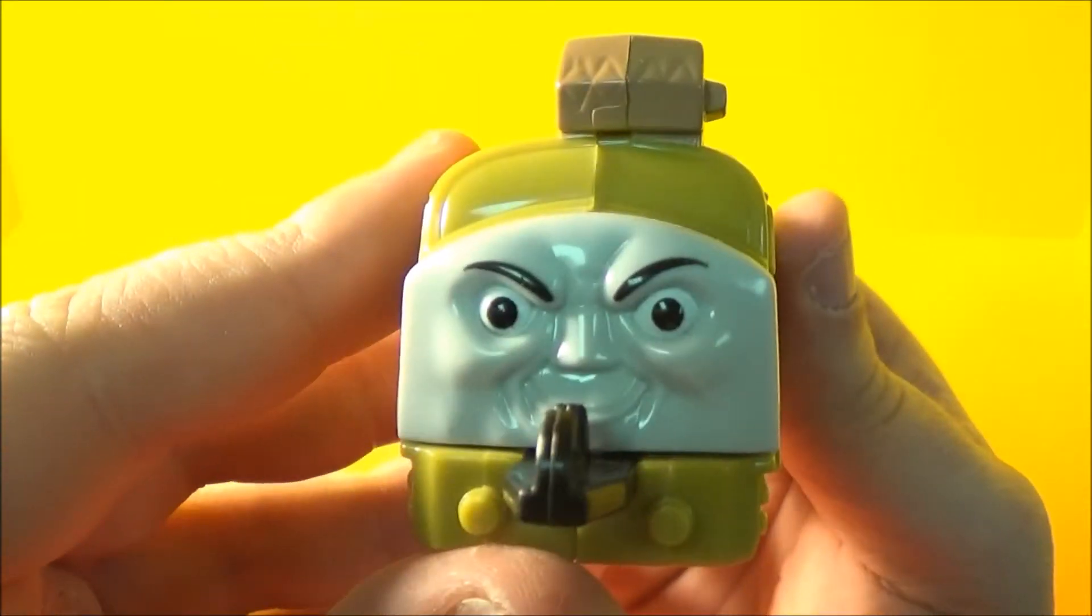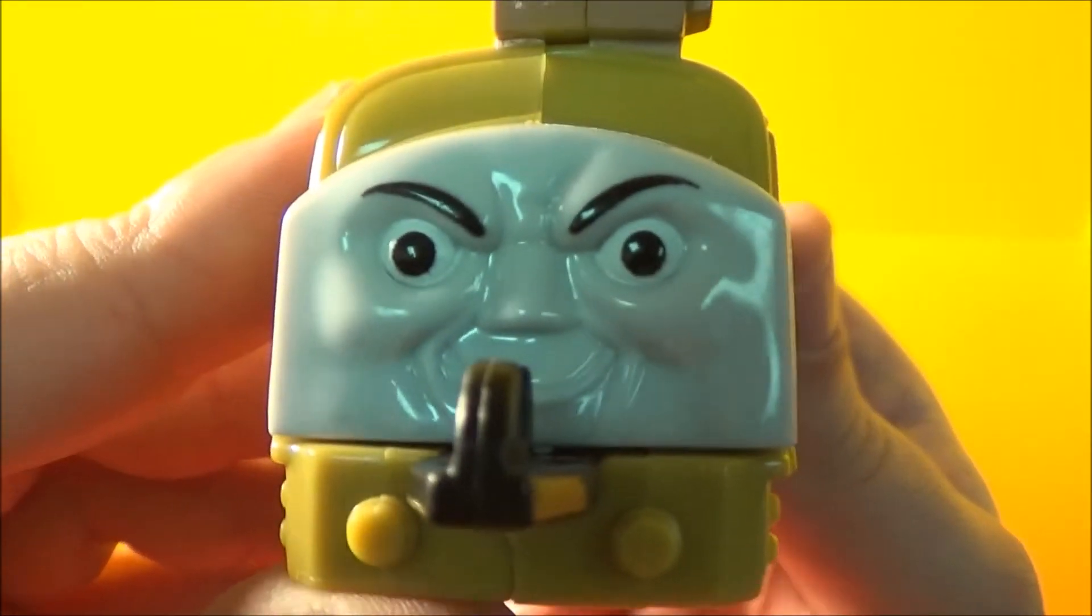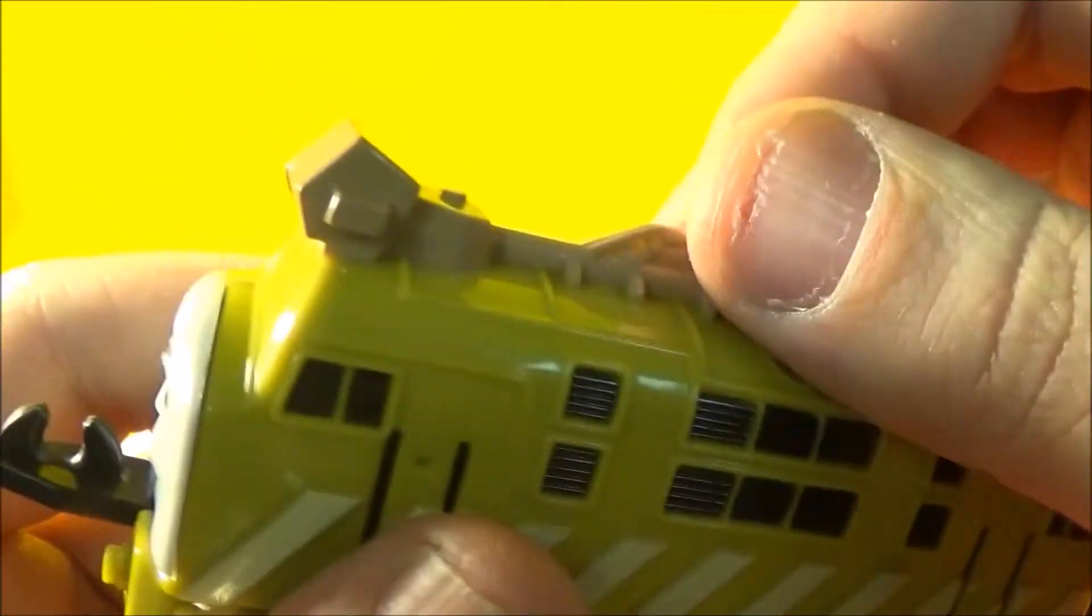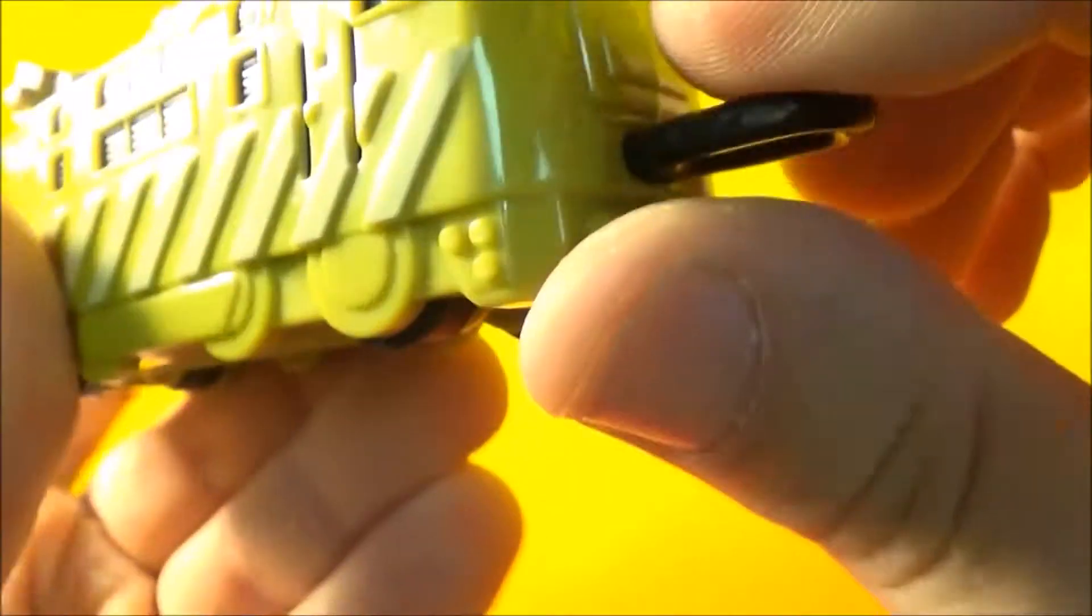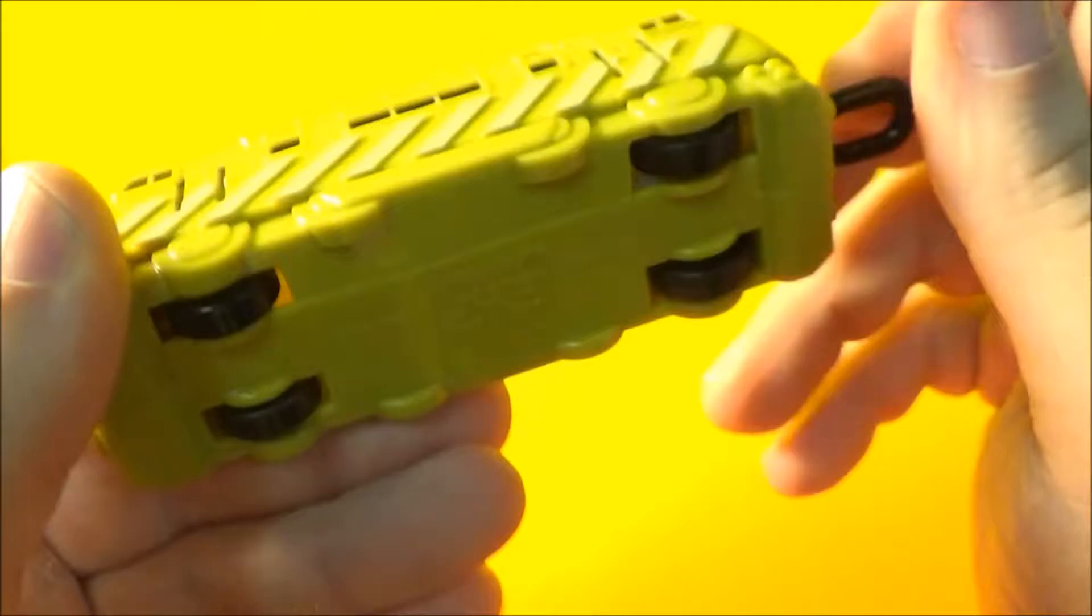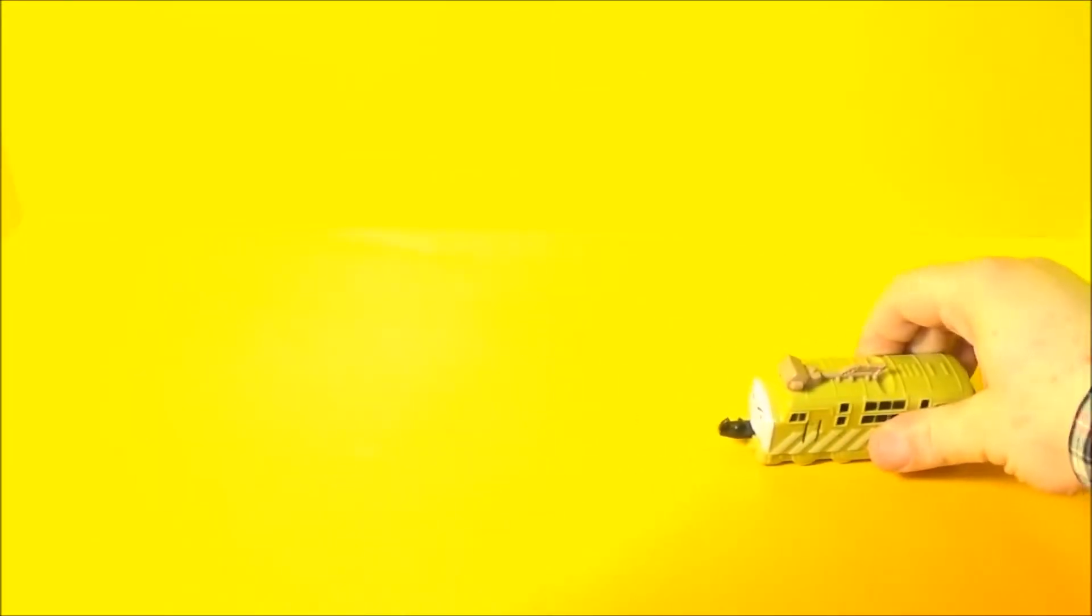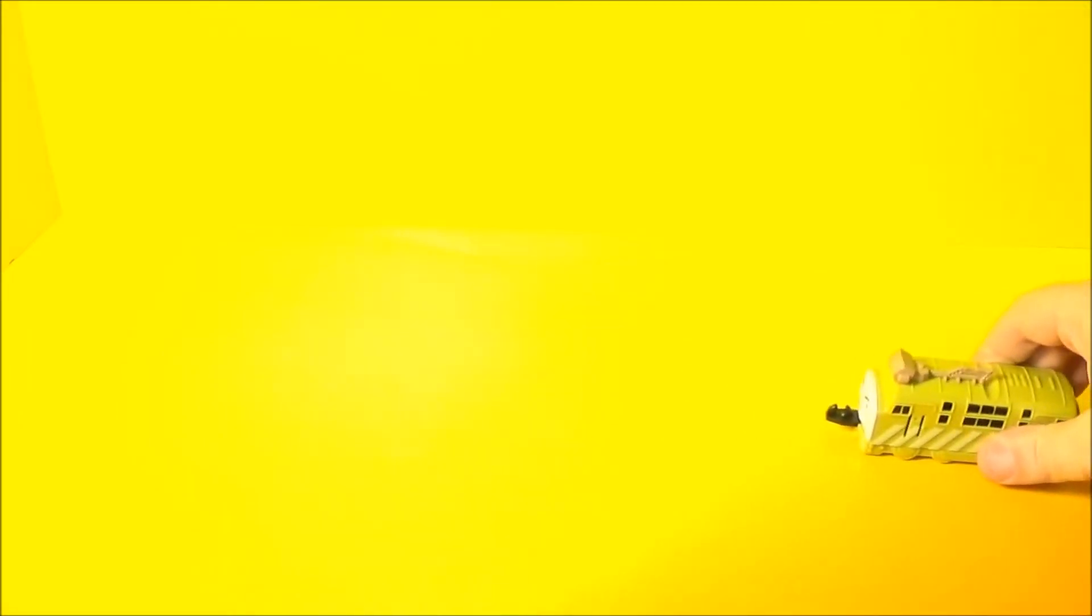Next up in the set we have Diesel 10. Just look at that determined face. Got a nice little design up top here. Got a connector in the front and the back. And he's a pullback. So let's pull him back and let him go. Let's do that one more time to send us off to the next toy.